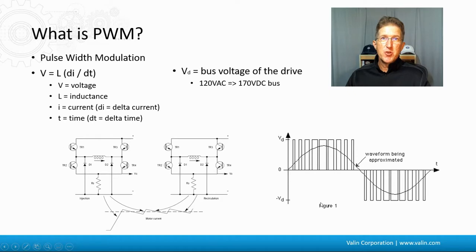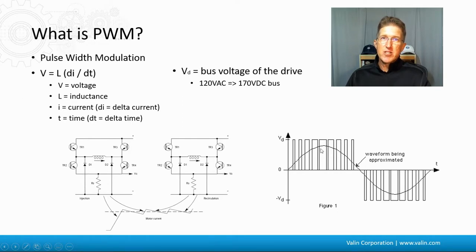A lot of people make the mistake of troubleshooting a drive and motor problem by putting a multimeter between the motor and drive to see what the voltage is. But the voltage is constantly changing from 170 to zero to negative 170, so they get some weird reading. You can see that voltage if you put an oscilloscope on there, but that's not what you want to look at. If you're troubleshooting between a motor and drive, put a current clamp on there and look at the current as it's changing. If the motor is not moving, you're stuck at whatever that current is at that location.